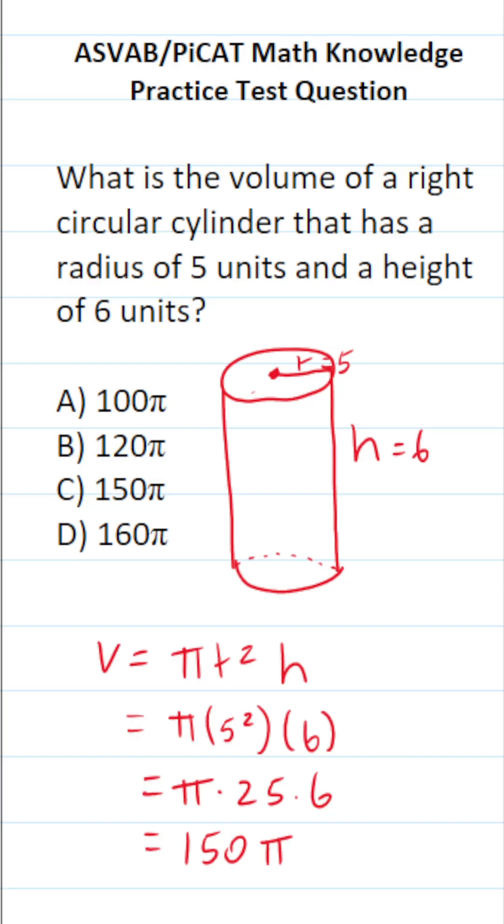So the volume of this right circular cylinder is C, 150π. Again, as long as you can find the area of a circle, you should be able to find the volume of a right circular cylinder very easily.